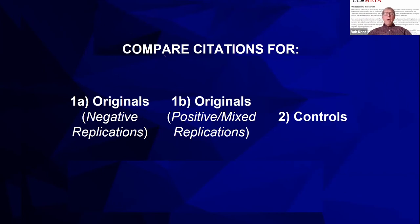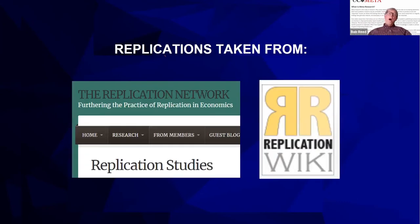We're going to assemble a sample — actually numerous samples — and they're going to consist of three types of studies: original studies that had negative replications, original studies that had positive or mixed replications, and then the matched controls. We're going to draw our replications from economics and from two sources: Replication Wiki and the Replication Network, both of which post replication studies publicly and focus in the area of economics.